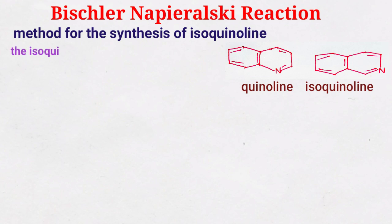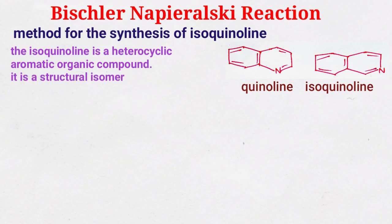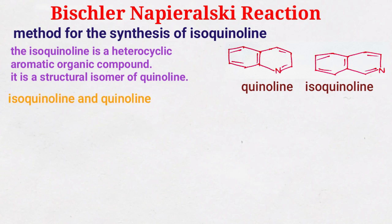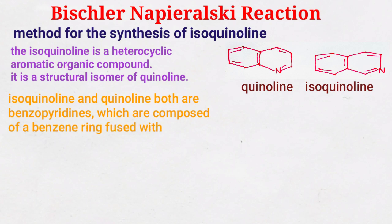Isoquinoline is a heterocyclic aromatic organic compound, and it is a structural isomer of quinoline. So this one is isoquinoline and this one is quinoline. Both isoquinoline and quinoline are benzopyridines, which are composed of a benzene ring fused with a pyridine ring.